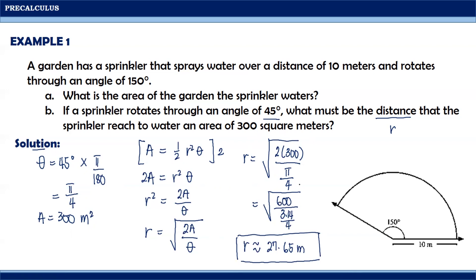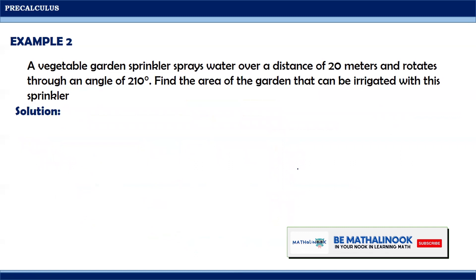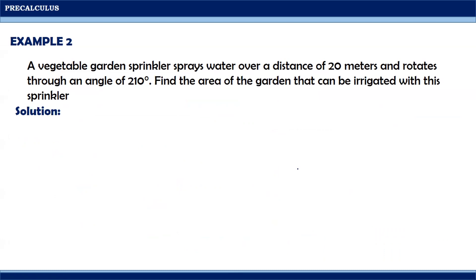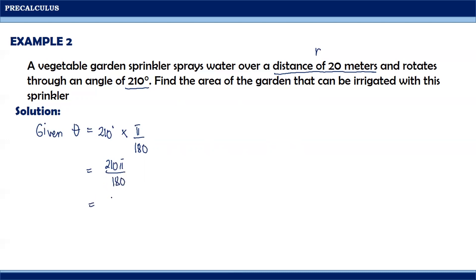Let us try another example. A vegetable garden sprinkler sprays water over a distance of 20 meters and rotates through an angle of 210 degrees. Find the area of the garden that can be irrigated. From the given, the distance of 20 meters is our radius r, and the central angle theta is 210 degrees. Converting to radians: 210 times pi over 180 gives 210pi over 180, which simplifies to 7pi over 6. The radius is 20 meters.